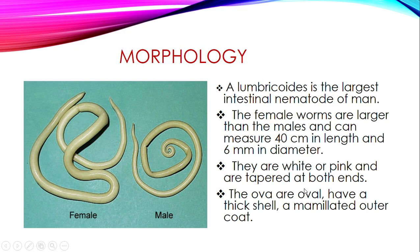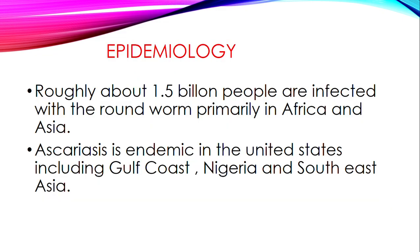When it comes to the ova, or egg, the ova are oval and have a thick shell with an albuminous outer coat. We will see how the ova look as we move on.